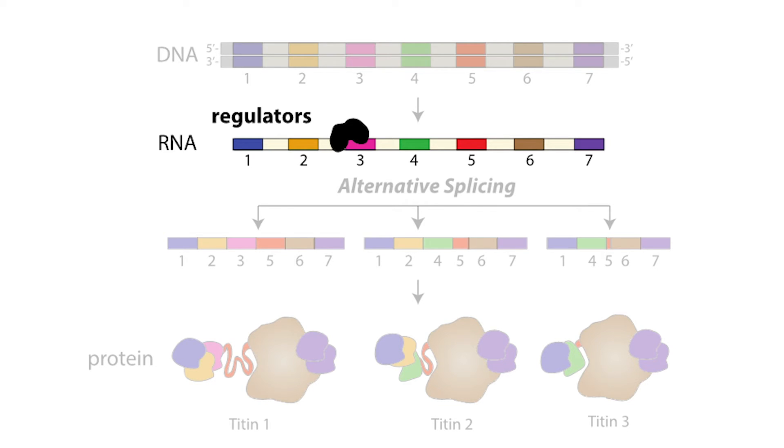What I actually study in my lab are the regulators of this process. The regulators tell the molecular scissors where they should cut or where they shouldn't cut. They determine all of the alternative splicing in the cell, and ultimately which specific versions of proteins are expressed in which different type of muscle.